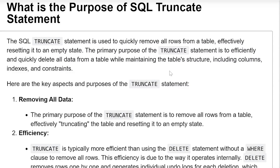What is the purpose of the SQL TRUNCATE statement? The SQL TRUNCATE statement is used to quickly remove all the rows from a table, effectively resetting it to an empty state. The primary purpose of the TRUNCATE statement is to efficiently delete all the data from a table while maintaining the table structure, including columns, indexes, and constraints.